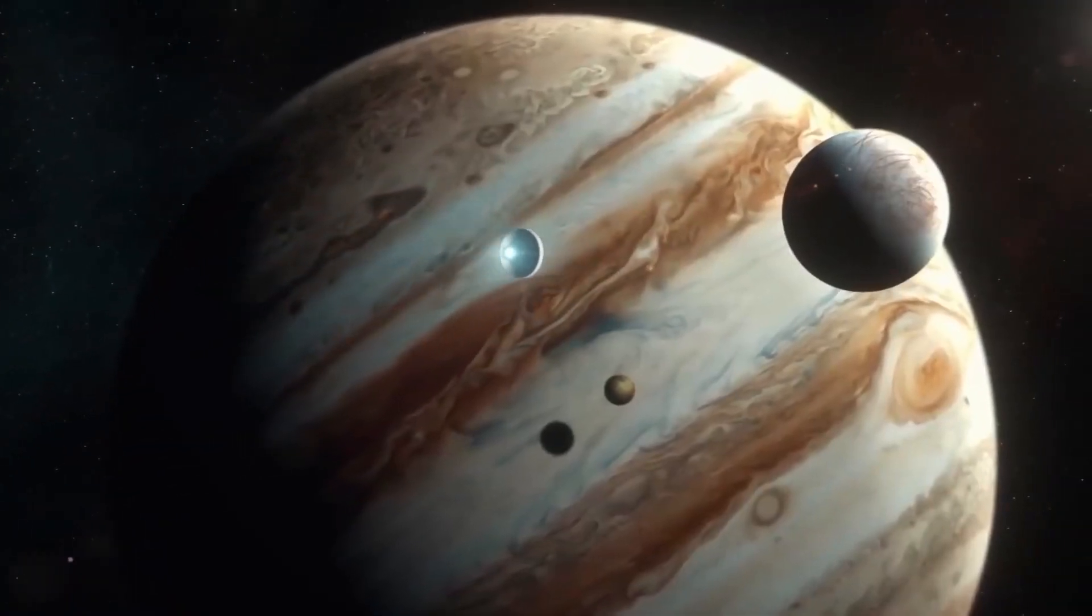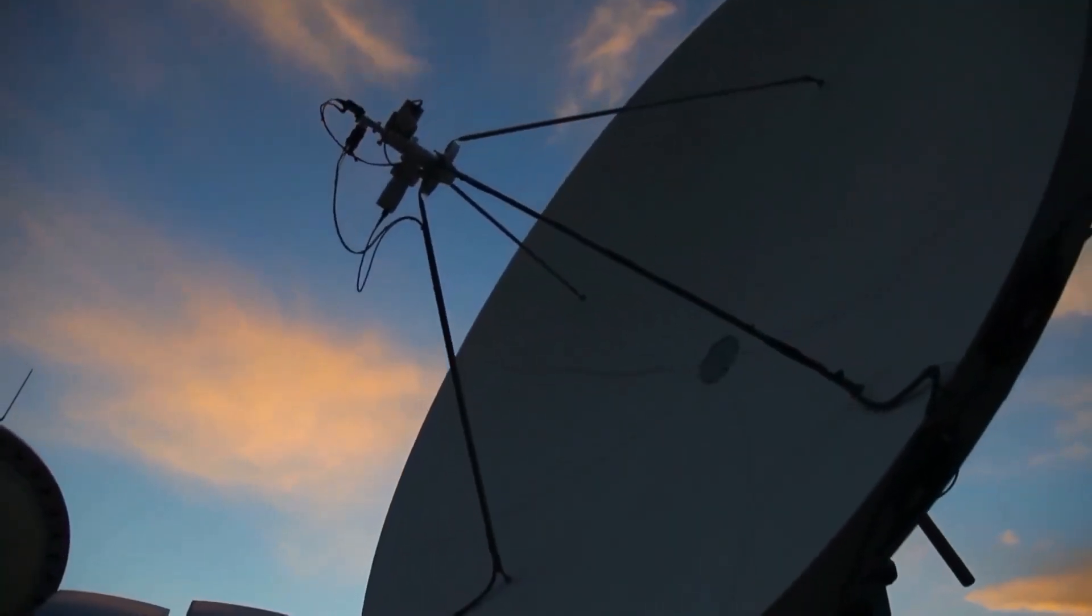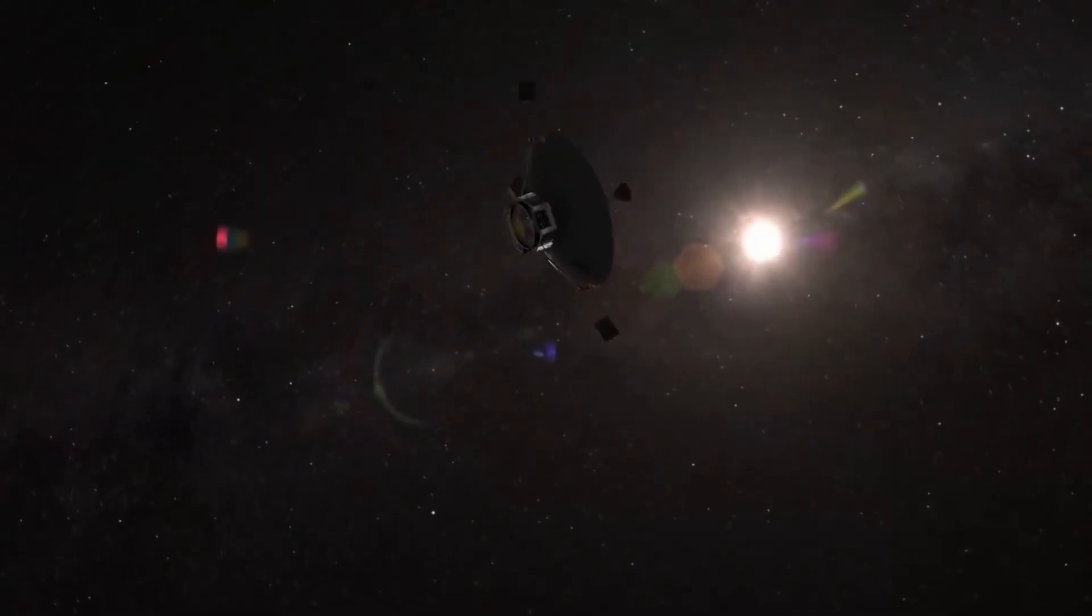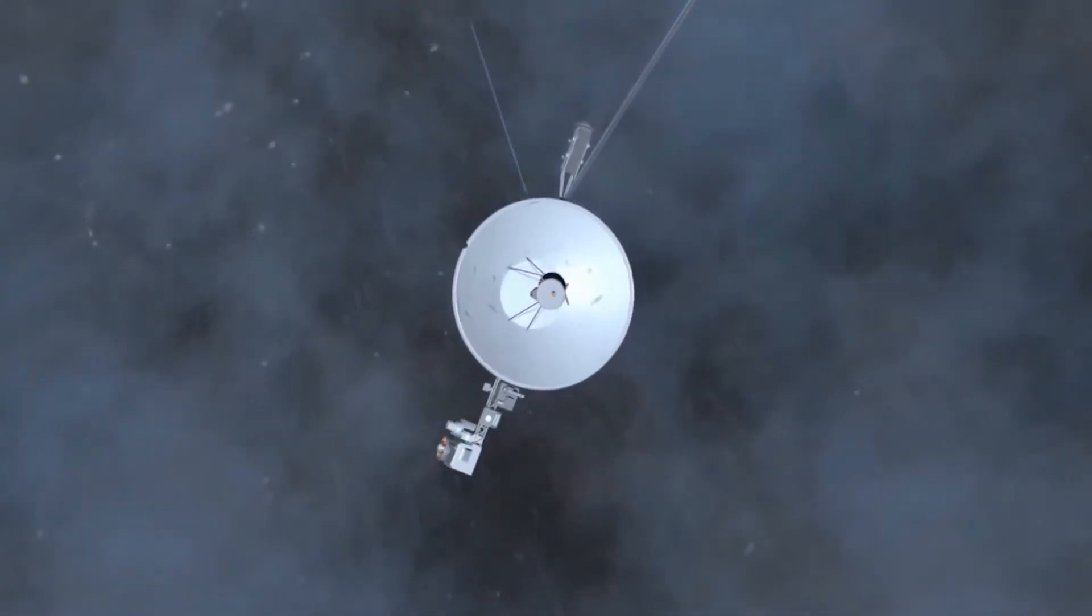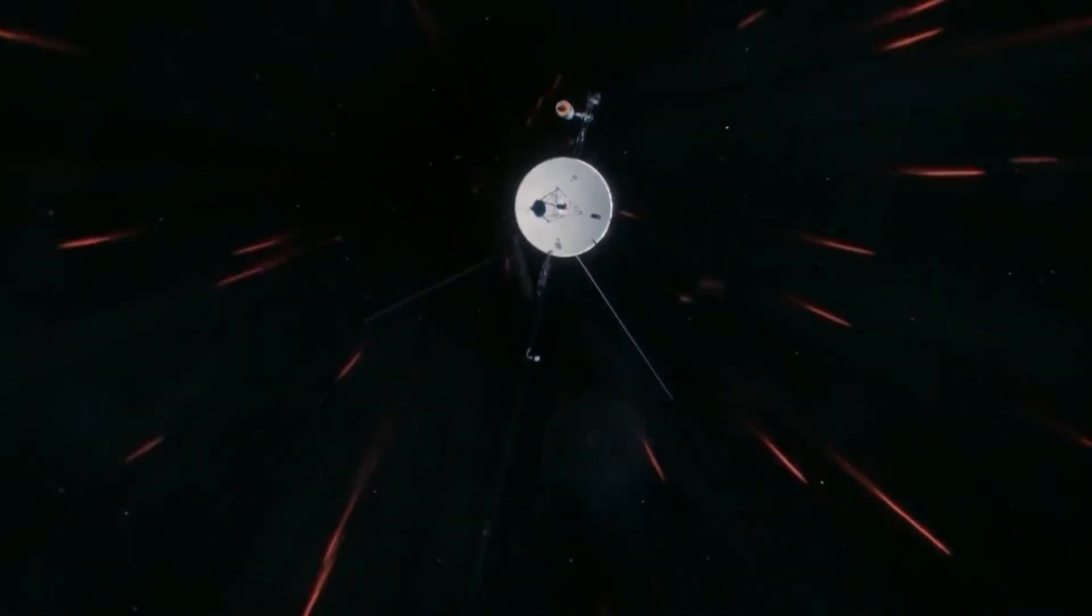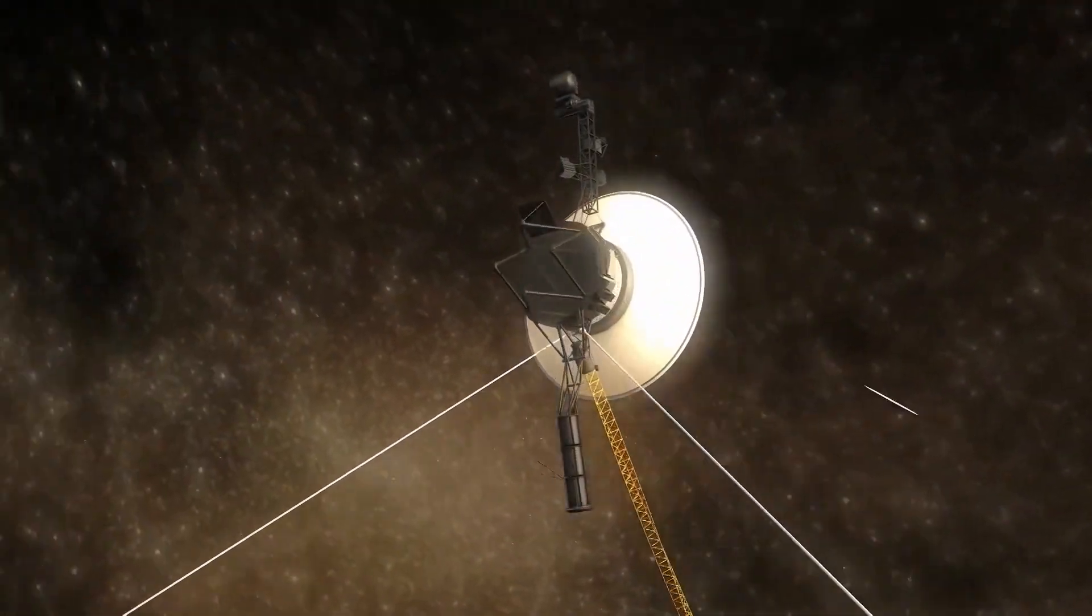The closest encounter to Saturn was on August 26th, at a range of about 100,000 kilometers. The spacecraft provided more detailed images of the ring spokes and kinks, and also the F-ring and its shepherding moons, all found by Voyager 1. Voyager 2's data suggested that Saturn's A-ring was perhaps only about 300 meters thick.